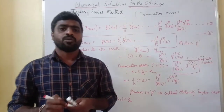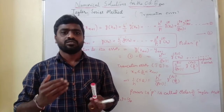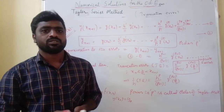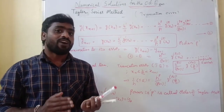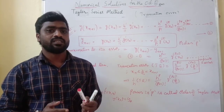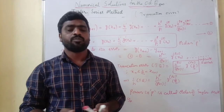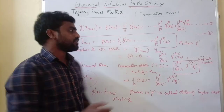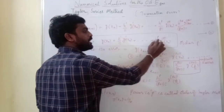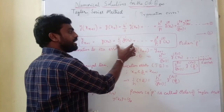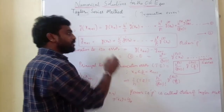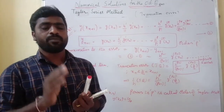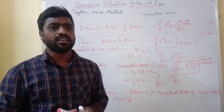In examinations, you may be asked to determine a numerical value like y(1.2) using the Taylor series method of order 2, 3, or 4. You replace p with the given order. If the order is 2, take 3 terms; if order is 1, take 2 terms; if order is 4, take 5 terms. We go up to h to the power p, where p is the order.